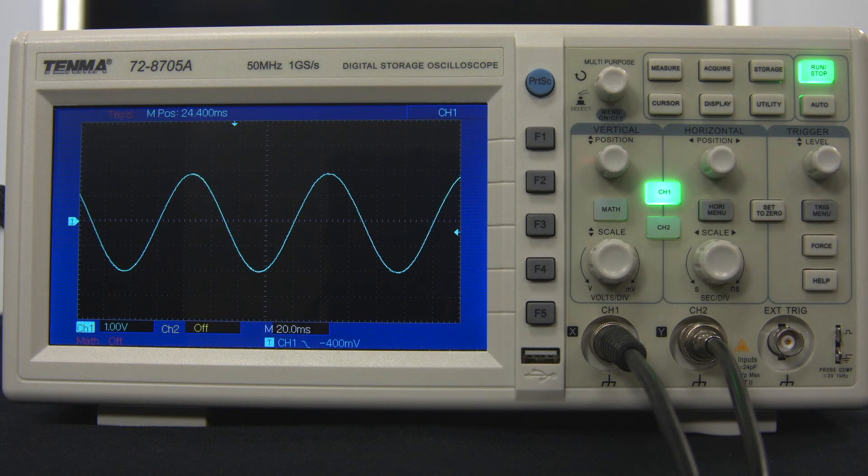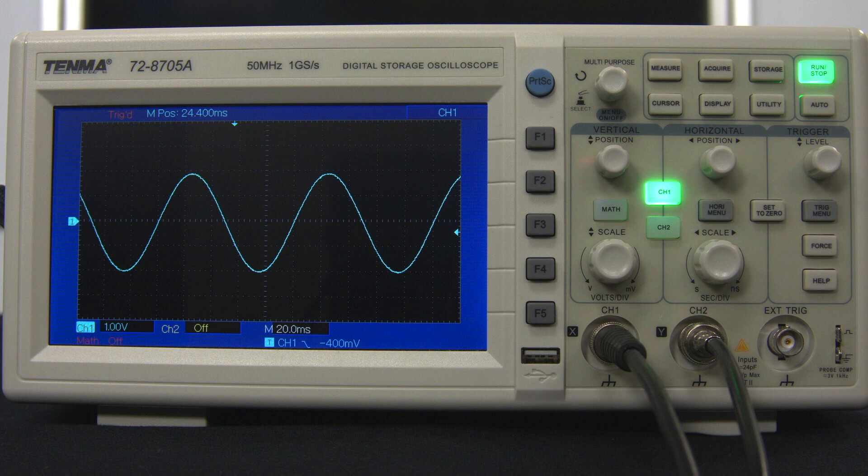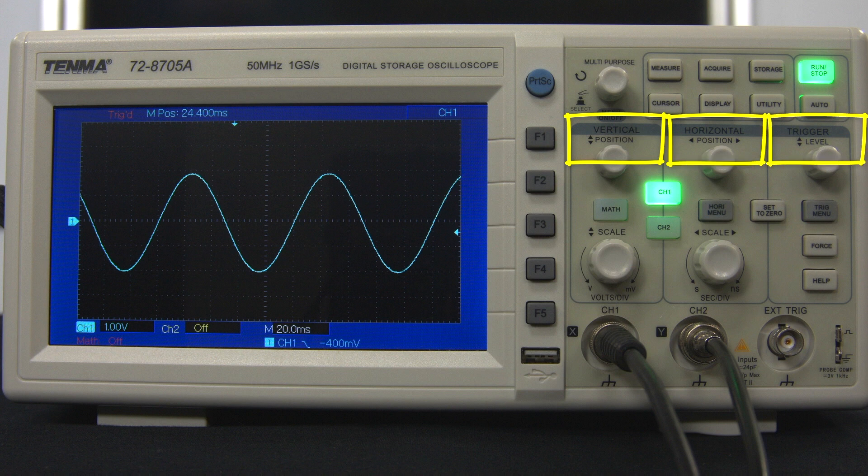There are many other features of the oscilloscope that make it such a powerful piece of test equipment, more than we can show in this video. But if you can understand the main adjustments of the vertical, horizontal, and trigger controls, you'll be ready to explore the instrument in the lab.